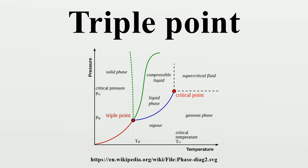In thermodynamics, the triple point of a substance is the temperature and pressure at which the three phases of that substance coexist in thermodynamic equilibrium.